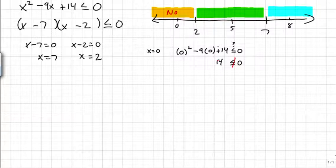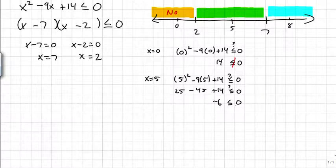So I want to test the next point and that would be 5. So if x equals 5, I want to see that's 5 squared minus 9 times 5 plus 14. Is that really less than or equal to 0? So I've got 25 minus 45 plus 14. Is that really less than or equal to 0? I believe that comes out to negative 6, which is less than 0. So I'll say that's a yes for this region.